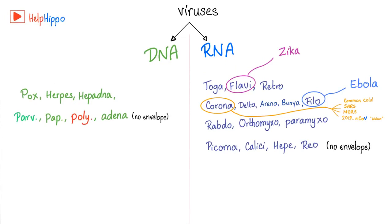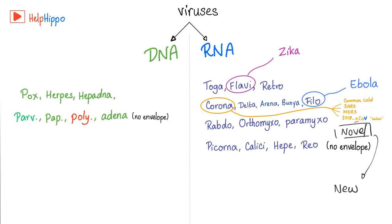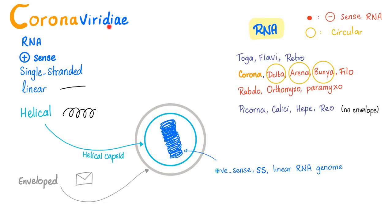Let's make our discussion relevant to current events. The Zika virus is a flavivirus, which is RNA. Ebola is a filovirus, again RNA. Corona includes common cold viruses, SARS (severe acute respiratory syndrome), MERS (Middle Eastern respiratory syndrome) — I'm from Egypt, so that one hits close to home — and the late 2019 coronavirus discovered in Wuhan. N stands for novel, meaning it's new. Coronaviridae — viridae is the plural of virus. It's an RNA virus.